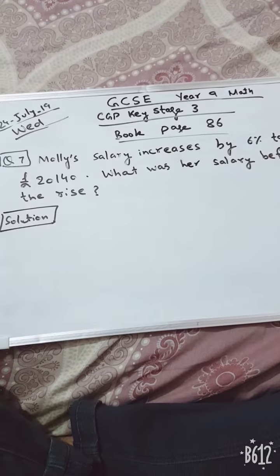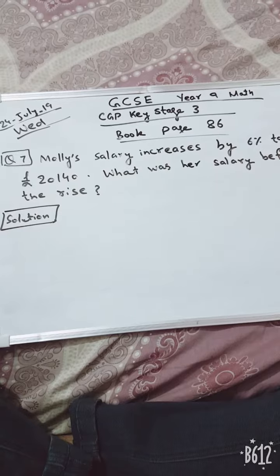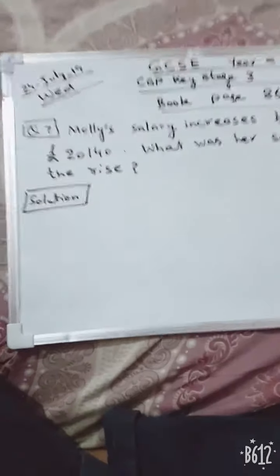GCSE Year 9 Math, CGP Key Stage 3. This is the name of the book and the book page is 86, and these are the warm-up questions. Question number 7.